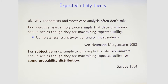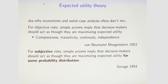The argument goes further. Imagine there weren't objective numerical probabilities attached to each outcome. Savage has a further version of this theory — for subjective risks, a further set of simple axioms implies that decision makers should act as though they're maximizing expected utility for some probability distribution. So the argument essentially says: if you're rational, you should act as though you're maximizing expected utility. And if you don't have a prior, you should be acting as though you have a prior. These arguments persuaded economists for a very long time that this was not only the normatively right way to model, but the right way to think about human behavior.